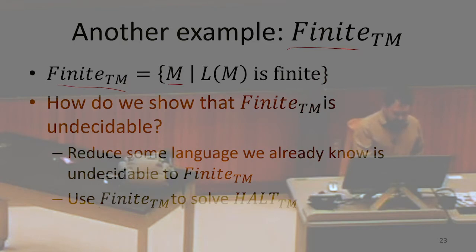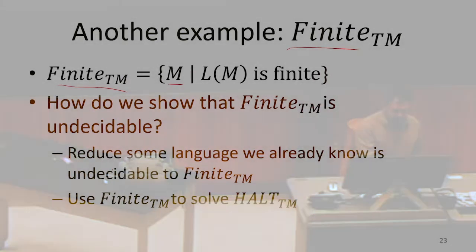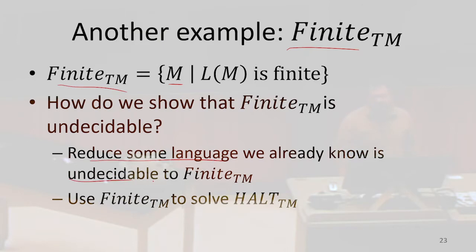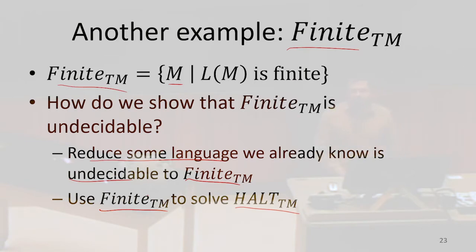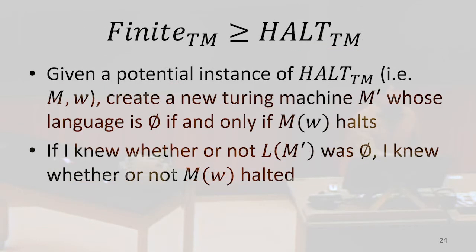The way we're going to do that is reduce some language we already knew to be undecidable — in this case HALT — to FINITE. So if we had a program that could solve FINITE for us, we could build a program that solves HALT. Since we proved HALT was impossible, FINITE must be impossible as well. We're going to show that FINITE is at least as hard as HALT — that is, we're going to reduce HALT to FINITE.